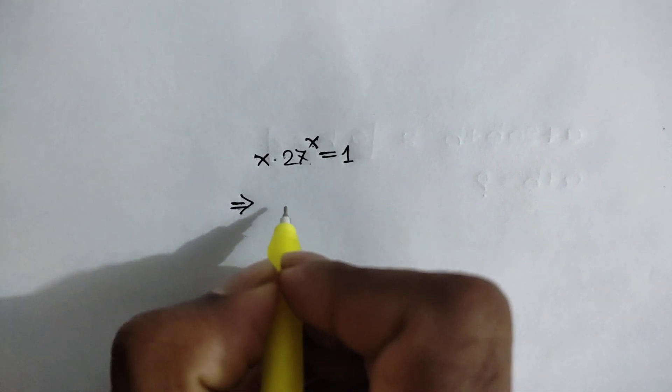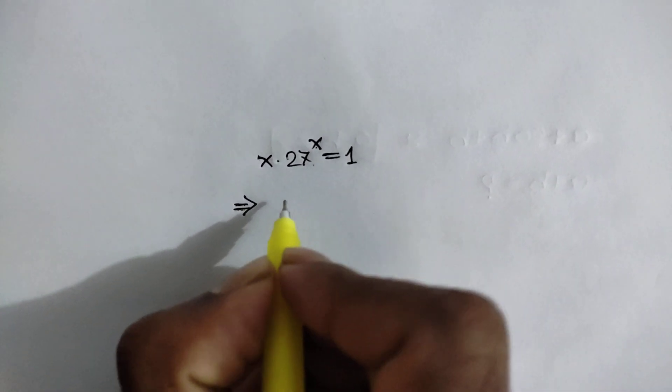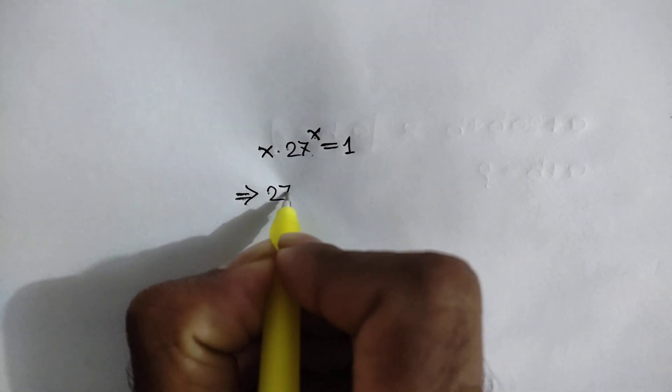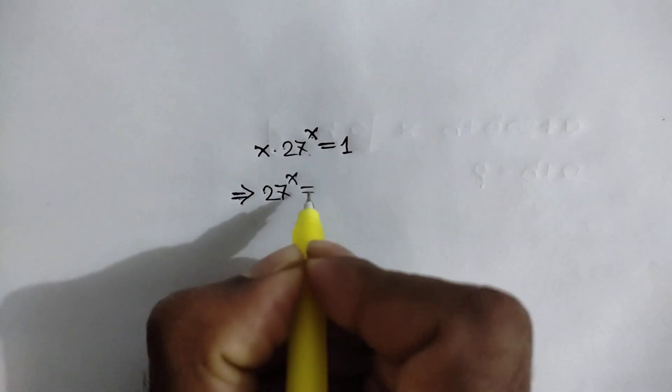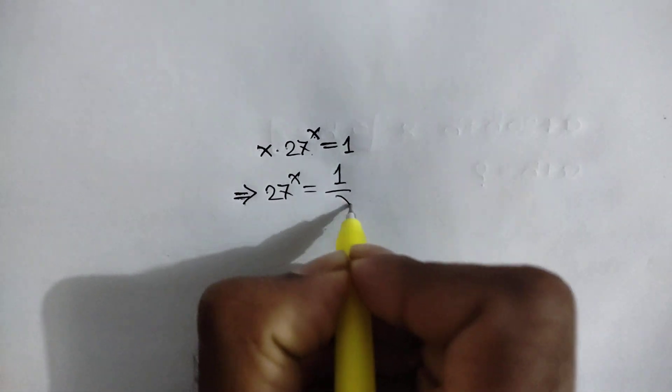Dividing both sides by x, we will have 27 to the power x is equal to 1 over x.